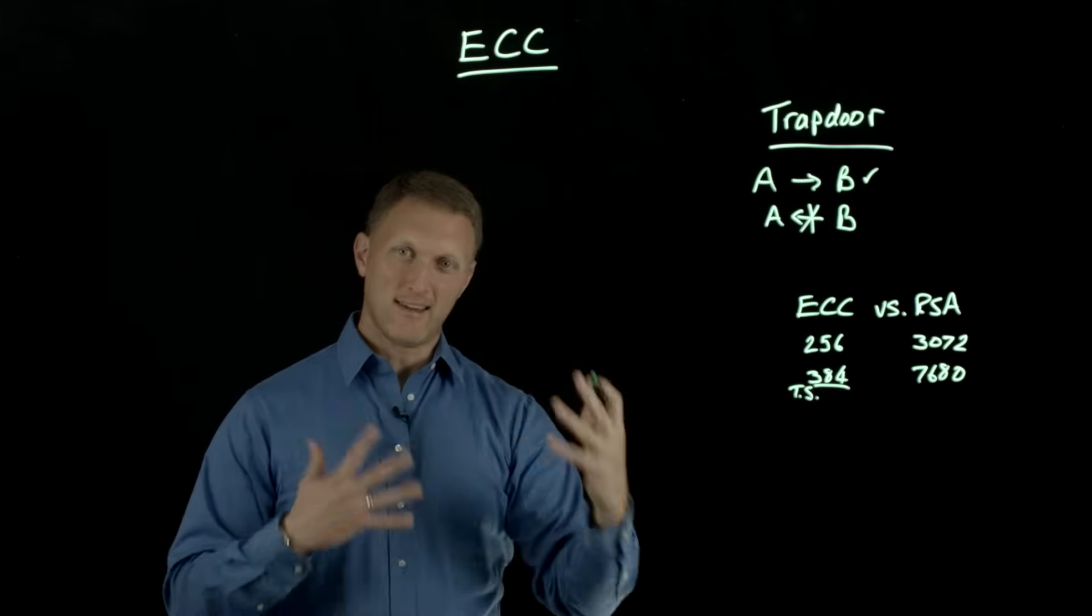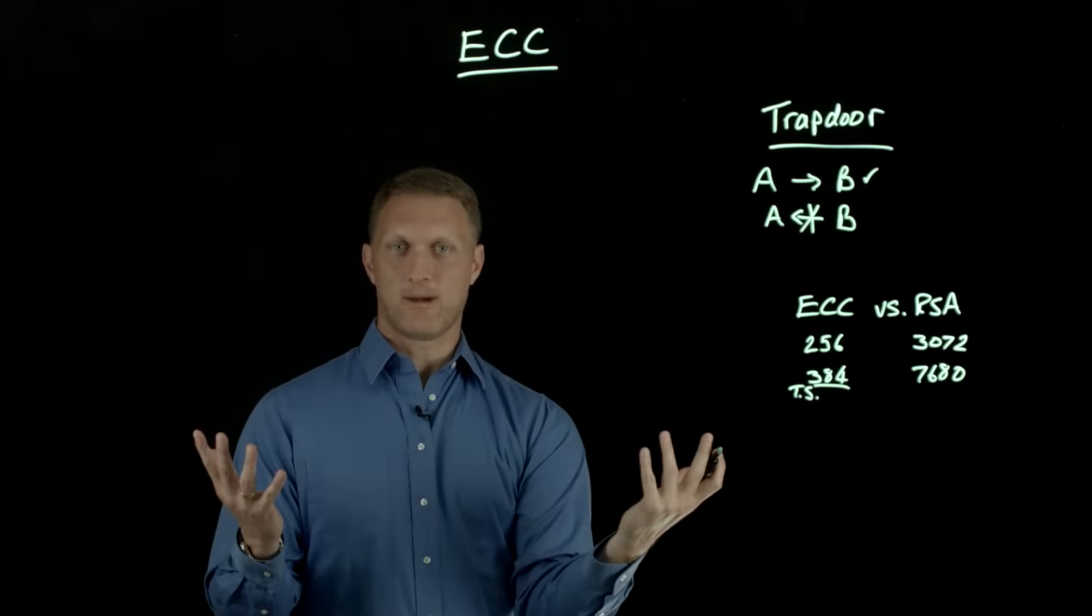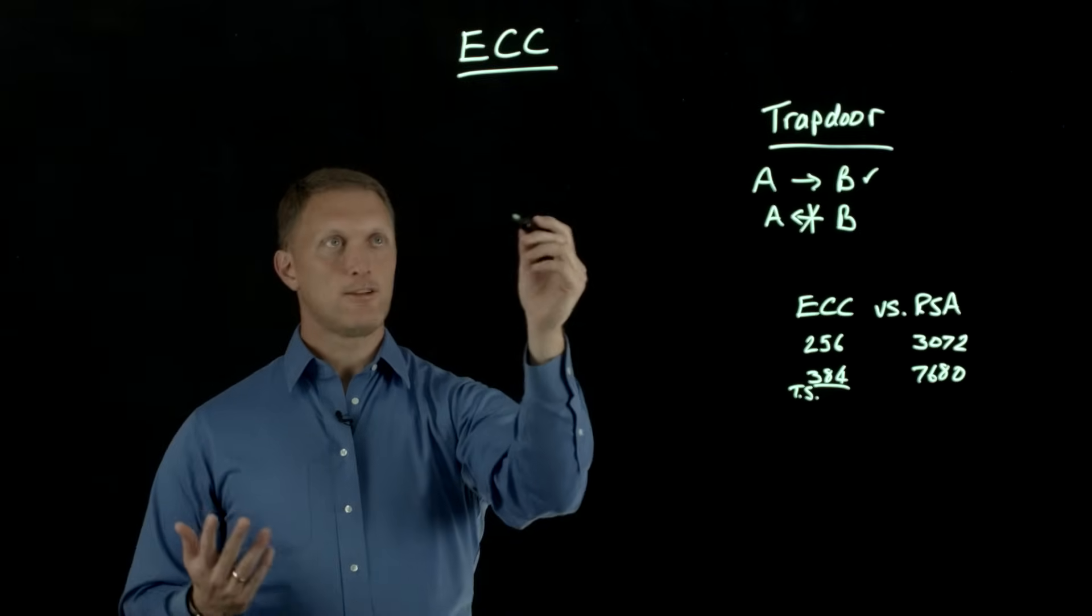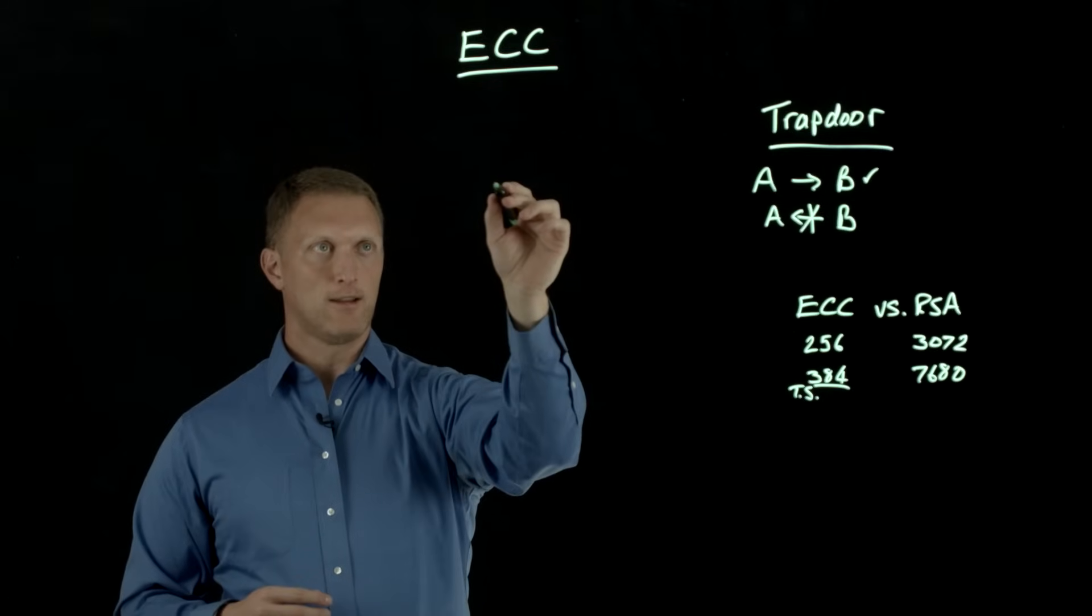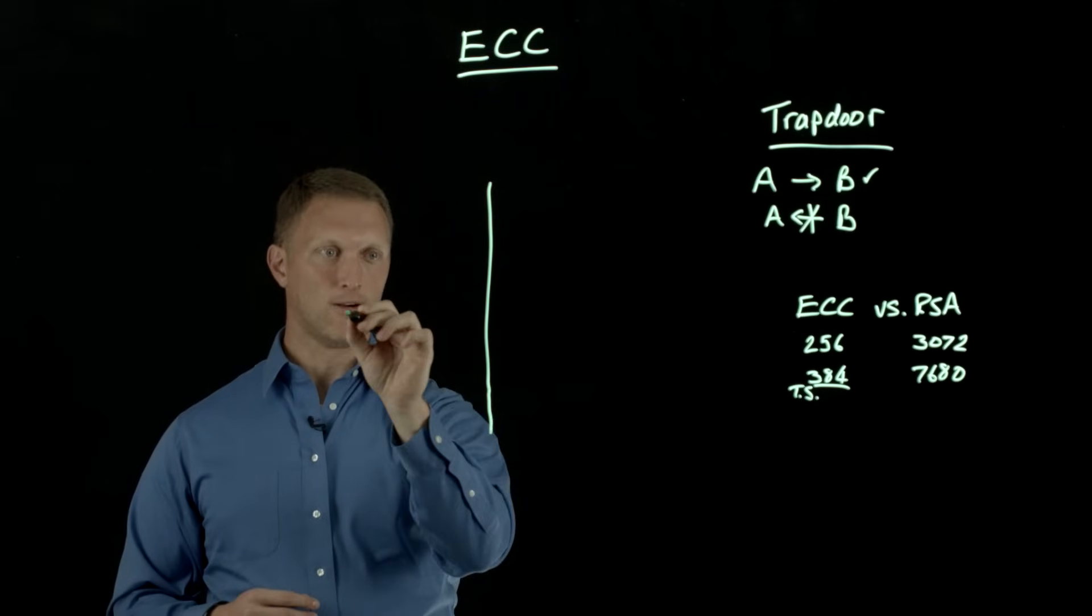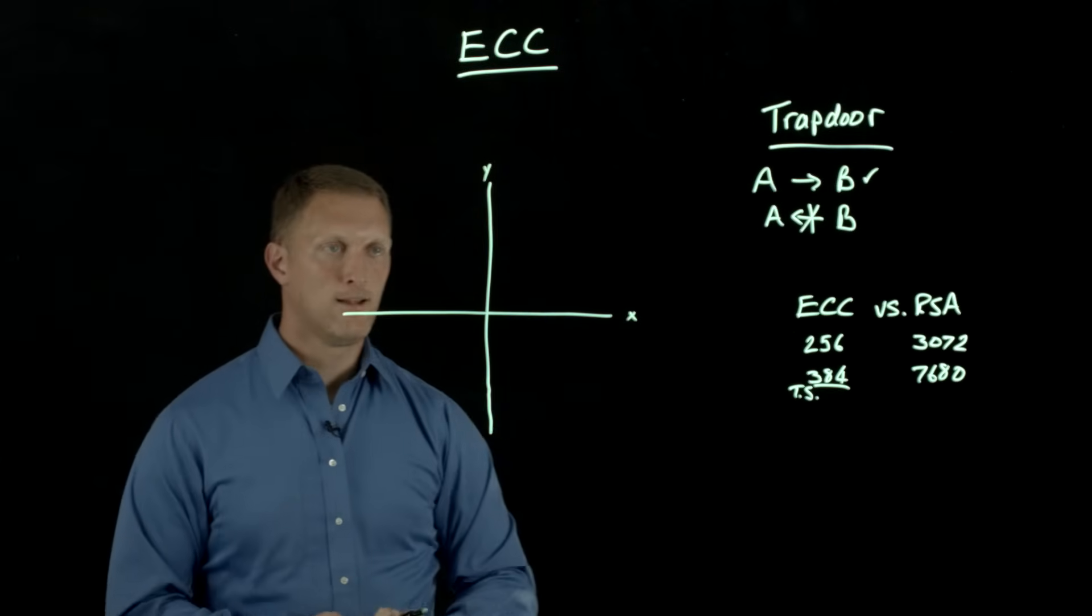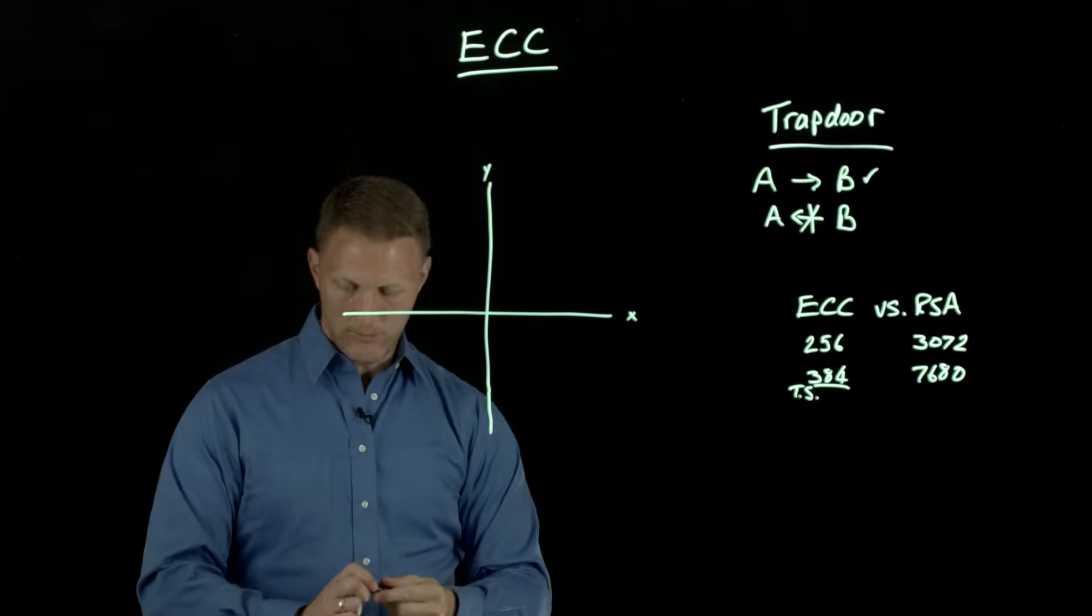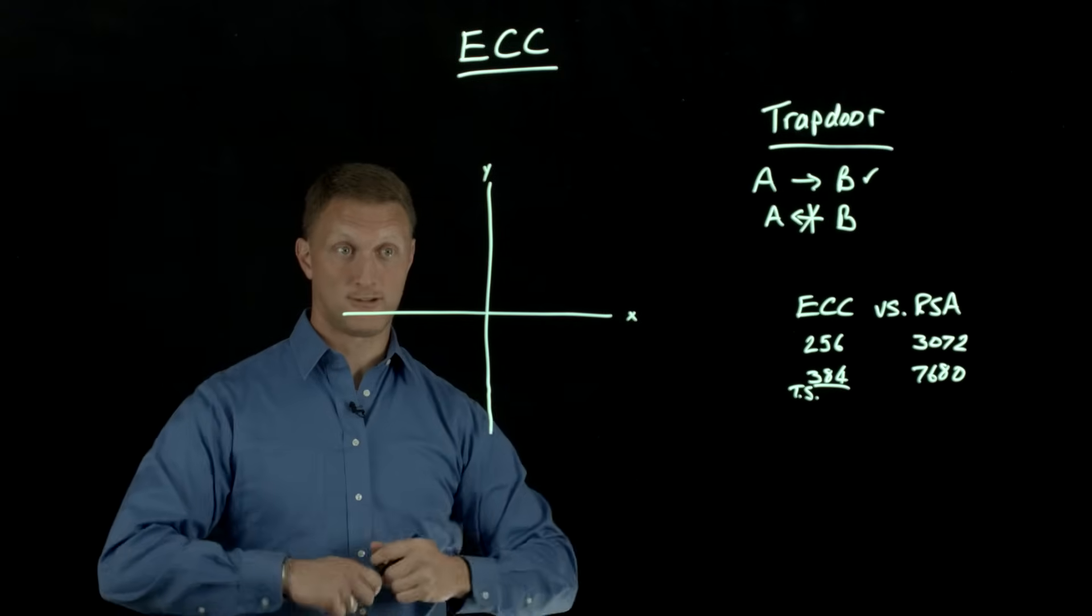So that's kind of ECC versus RSA. But again, what is ECC? How does it work? What's the magic behind the curtain as it were? So what I'm going to do is take you through kind of an example of elliptic curve cryptography, and I'm going to draw a math graph here, kind of a math function where this is the X-axis and this is the Y-axis. You remember back to algebra or whatever, and you're doing your math functions.